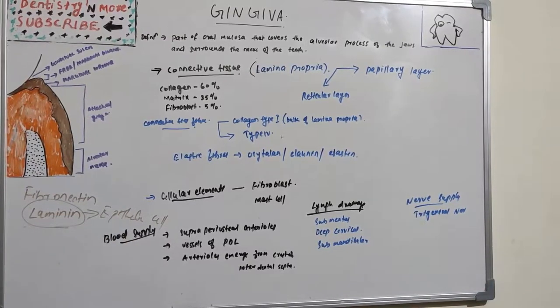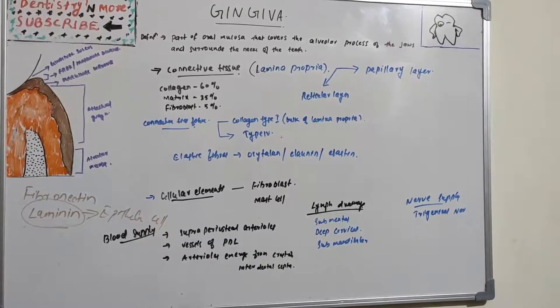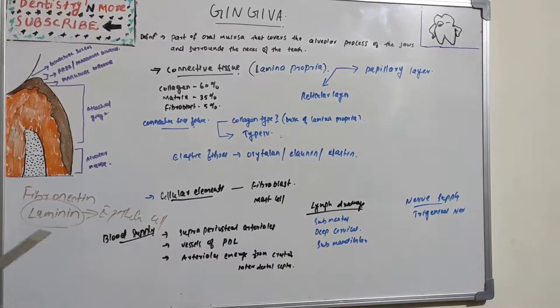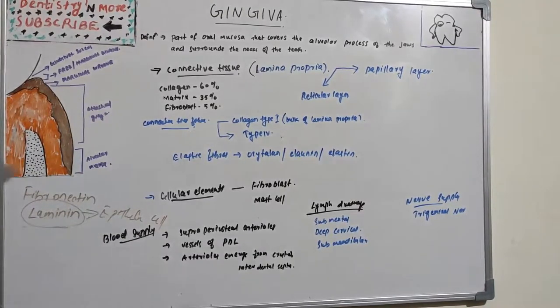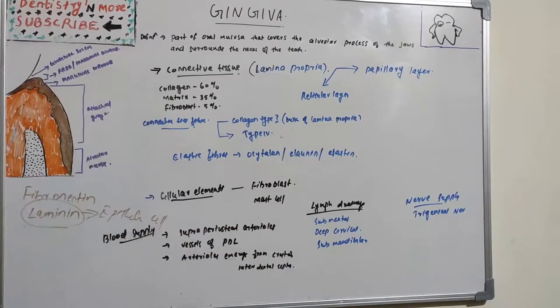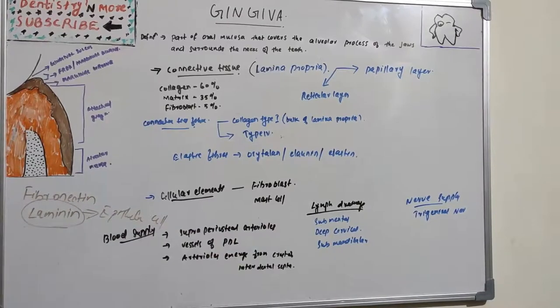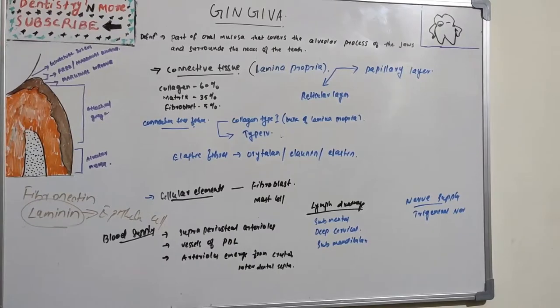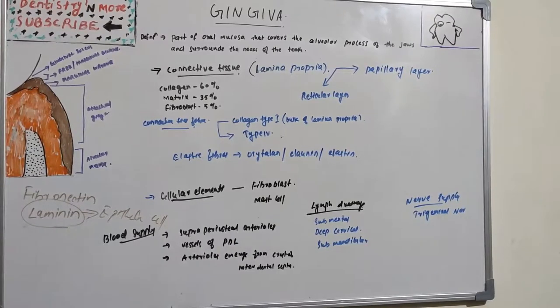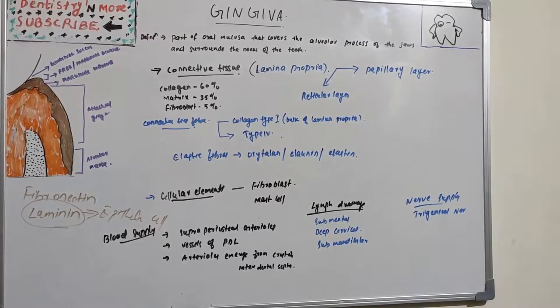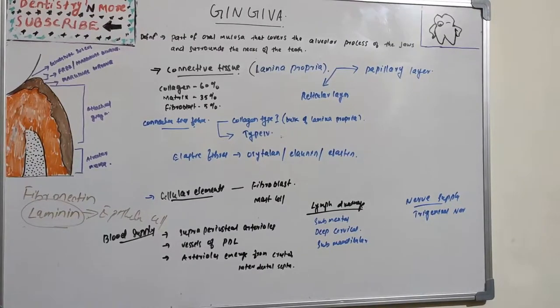And nerve supply is basically trigeminal nerve. So that was just some finishing points about gingiva, about the blood supply, lymph drainage, and nerve supply and the cellular elements, connective tissue part. Gingiva is a very vast topic. The parts of gingiva and the gingival fibers, about the epithelial cells, are very important for your exam. So I will come up with periodontal ligament in my next session. Thank you.